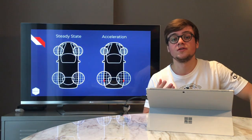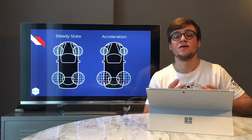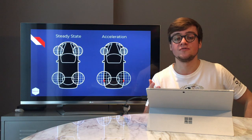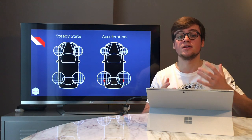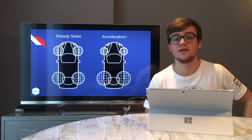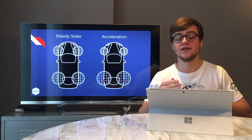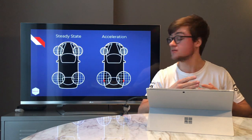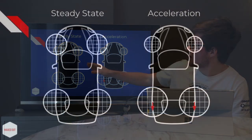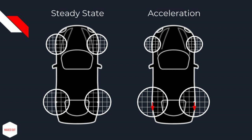So far we've only talked about cars in a steady state. The friction circle really becomes useful once we start moving — accelerating, braking, and turning. Let's look at the first scenario: smoothly accelerating in a straight line. On the left side we've got the steady state as a reference, and on the right we're accelerating. You can see the red arrows pointing downward just a bit, so we're still within the friction circle.